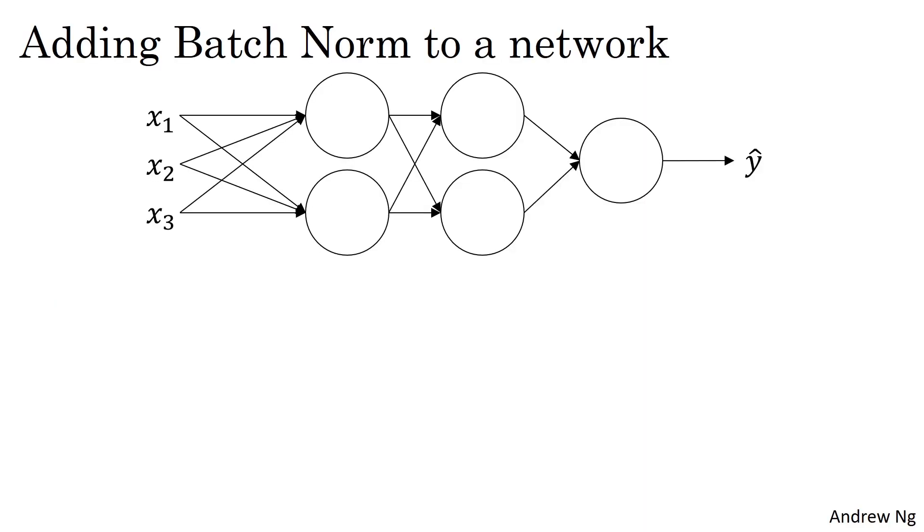Let's say you have a neural network like this. You've seen me say before that you can view each hidden unit as computing two things. First, it computes z, and then it applies the activation function to compute a.